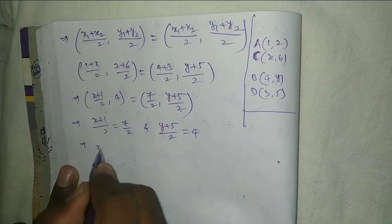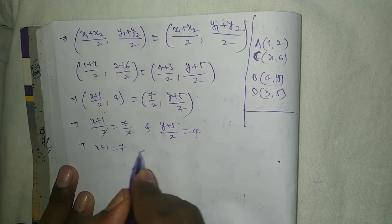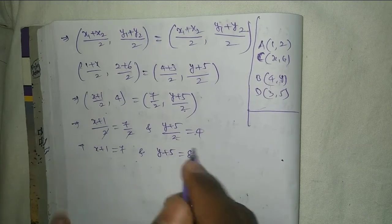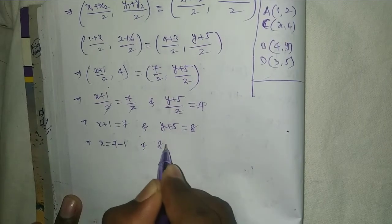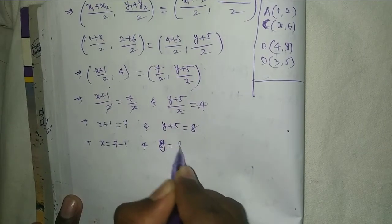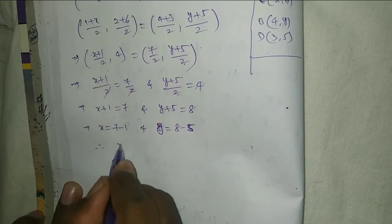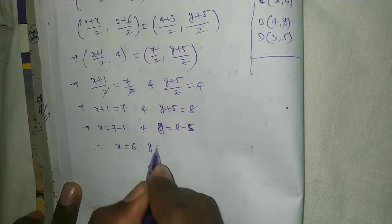Canceling the 2, we get x+1 = 7 and y+5 = 8. Therefore, x = 7-1 = 6 and y = 8-5 = 3.